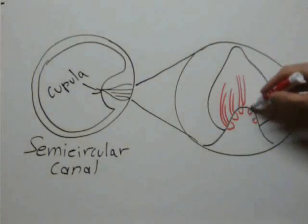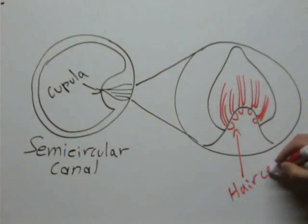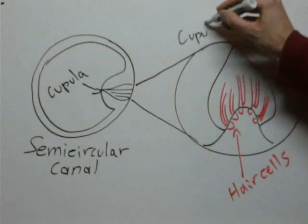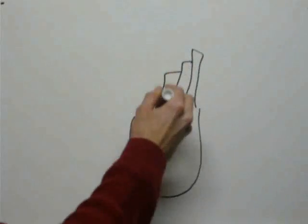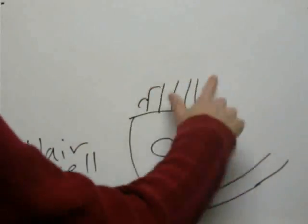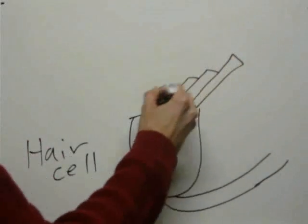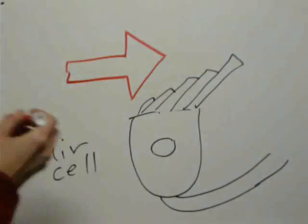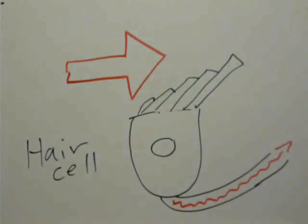And embedded in this gelatinous structure are what are called hair cells. These are called hair cells because they have what appear to be little tiny tufts of hair sticking out of the top of them. When these little hair-like structures get bent to one side, the hair cells send signals to your brain. So the point of the structure of the semicircular canal is to transform rotational energy into a force which can bend these little hair-like structures and then be noticed by your brain.